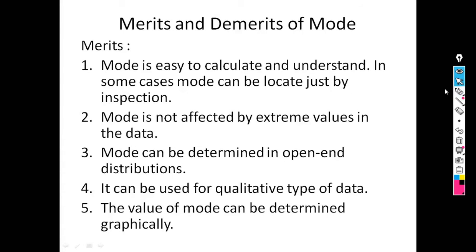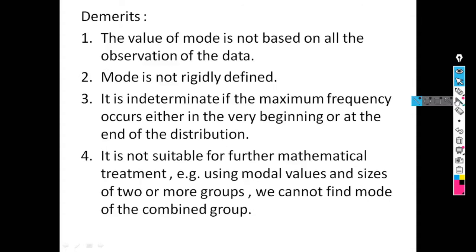Now the demerits of mode. The first demerit is that the value of mode is not based on all observations of the data, because for the calculation of mode we only consider the modal class, pre-modal class, and post-modal class — other classes are not considered. The next demerit is that mode is not rigidly defined.